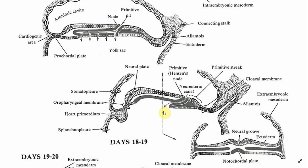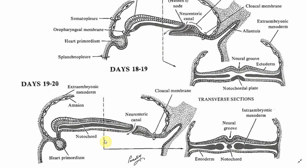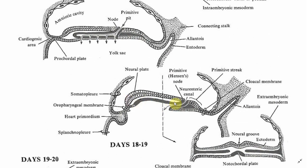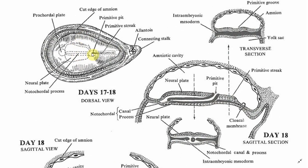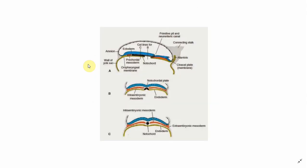What happens next is there is regeneration of the endoderm. The roof is still intact, and this roof starts growing laterally to form a notochordal plate. After the notochordal plate has been formed, this notochordal plate starts enfolding.